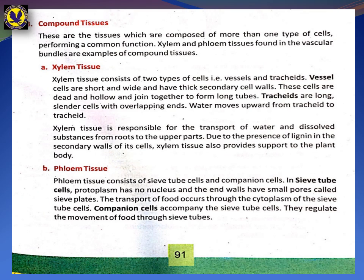Now after simple tissue, you have to study compound tissue. Compound tissues are tissues which are composed of more than one type of cells performing a common function. Xylem and phloem tissue found in the vascular bundle are examples of compound tissue. These are not made of one type of cell but work with different cells together.